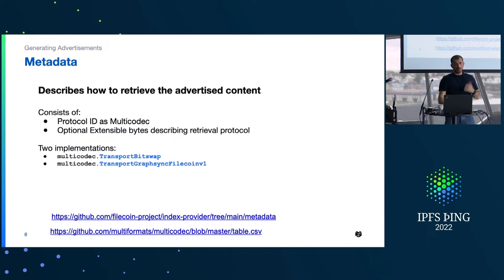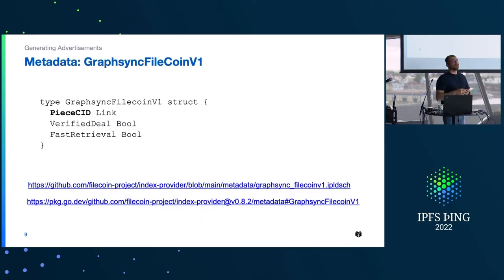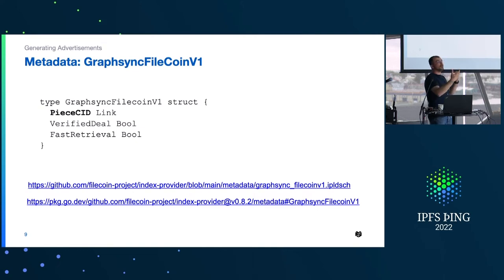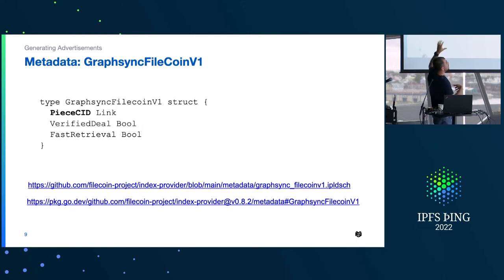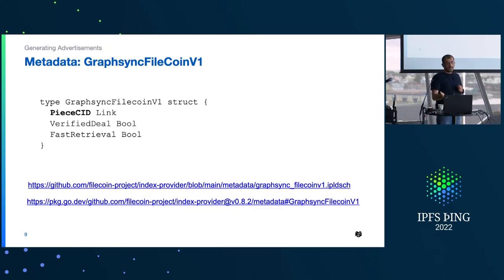Here is the IPLD schema showing the structure of bytes inside metadata for advertisements that support GraphSync Filecoin v1 retrieval. It has fields like piece CID, whether it's a verified deal, and whether it's fast retrieval. This metadata makes sense to something like Lotus and Boost, enabling you to retrieve information. There are links at the bottom pointing to the IPLD schema and the Go documentation package.